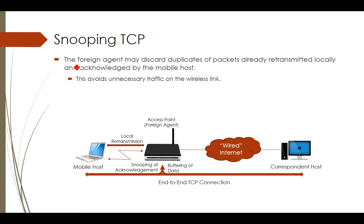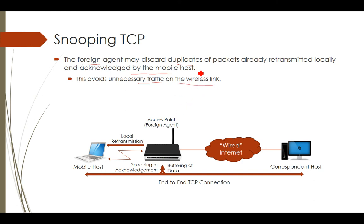Finally, the foreign agent may discard duplicates of packets already retransmitted locally and acknowledged by the mobile host. This avoids unnecessary traffic on the wireless link, and retransmitted acknowledgements must be handled by the access agent.